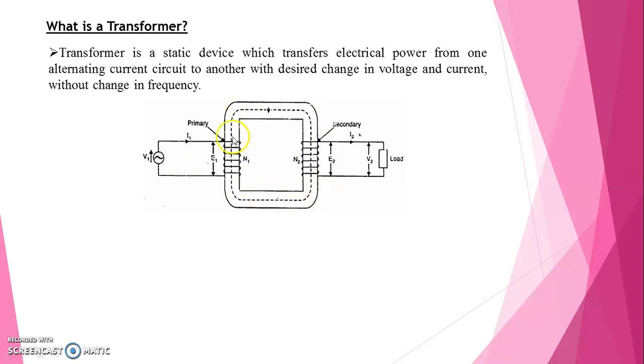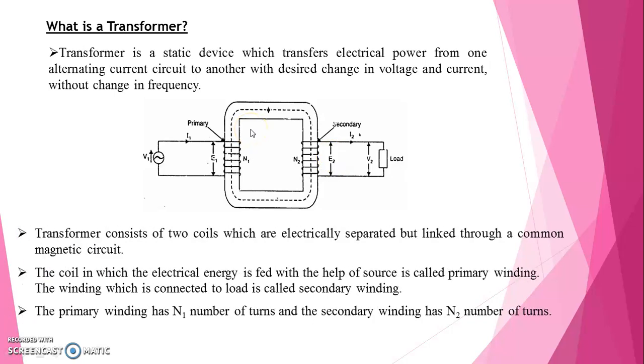Both coils are constructed, both coils are wound in a common magnetic core. Look at the diagram. It consists of two coils which are electrically separated but linked through a common magnetic circuit. The coil at which source is connected called primary coil. The coil at which load is connected called secondary coil. The primary winding has N1 number of turns and the secondary winding has N2 number of turns.